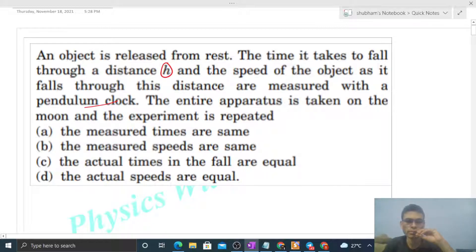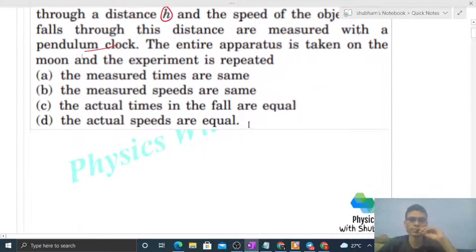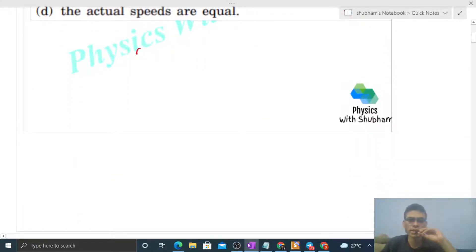The measured times are same, the measured speeds are same. So hamare paas ek object hai jise hum rest se release karte hai and yeh object h height niche jaata hai and iska jo time hai hum measure karte hai with the help of a pendulum clock. Let's say yeh experiment agar hum earth pe karte hai then what will be the time taken by this object.